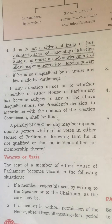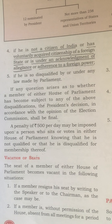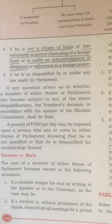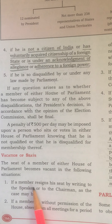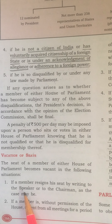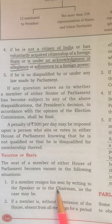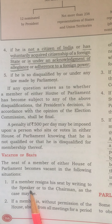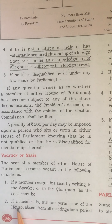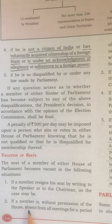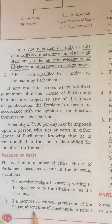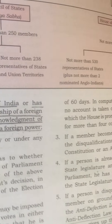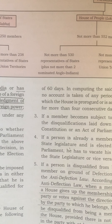Our next heading is vacation of seats — in what conditions are seats vacant? The seat of a member of either house of parliament becomes vacant in the following situations. First, if a member resigns a seat by writing to the speaker or to the chairman, as the case may be. Second, the seat is vacant if a member is without permission of the house absent from all meetings for a period of 60 days.